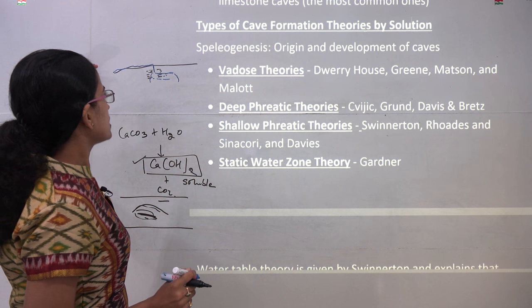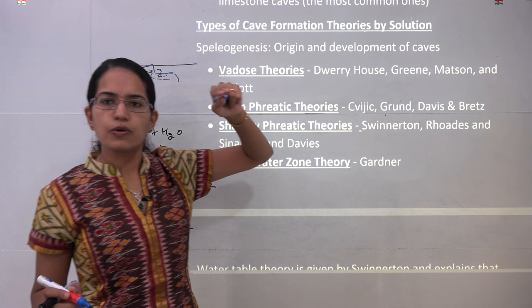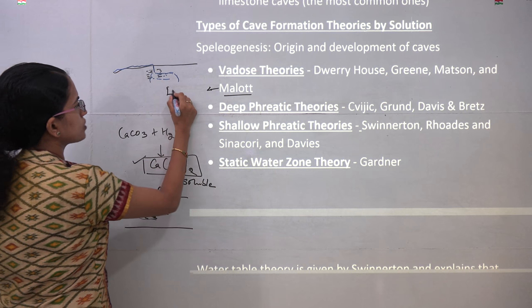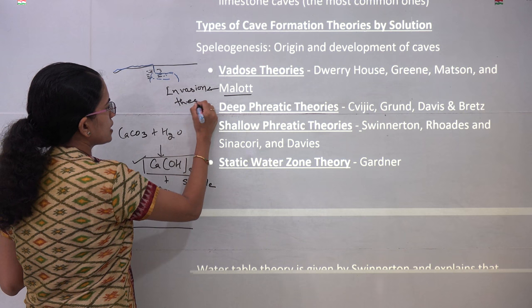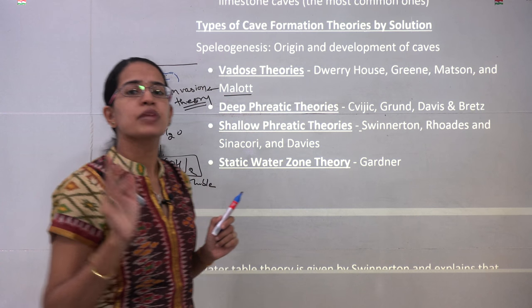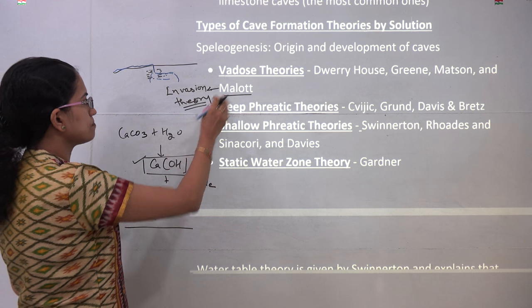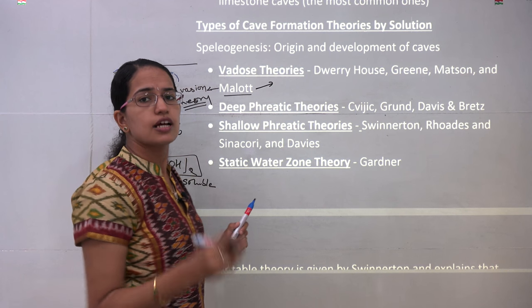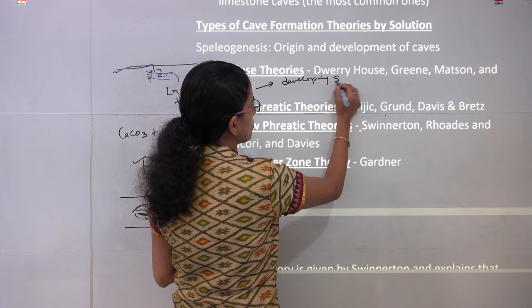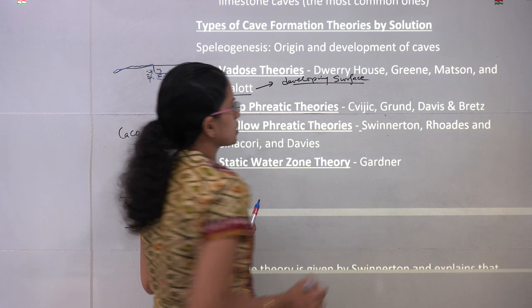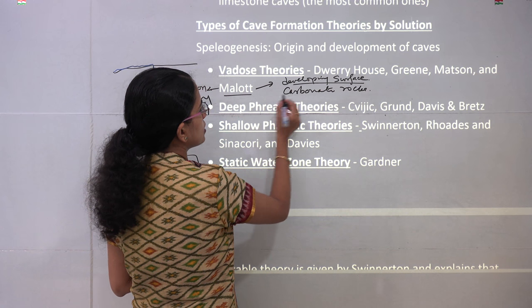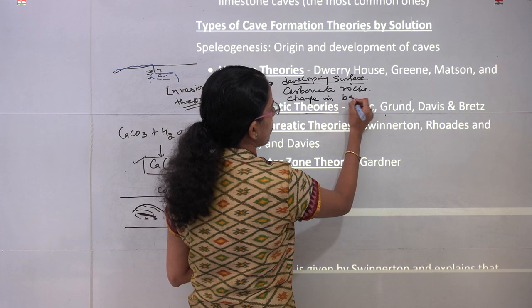The vadose theory says that water is running at the fastest level above the water table, and because of this you have percolations coming in. That was explained by Mallett under his theory known as the invasion theory. Under his invasion theory, Mallett explained this phenomenon where water is running and slowly and gradually percolates. There are certain essential conditions for this to occur. The vadose theories in general talked about four basic conditions. First, there should be a developing or underlying surface structure — based on this, you would have cave formations.